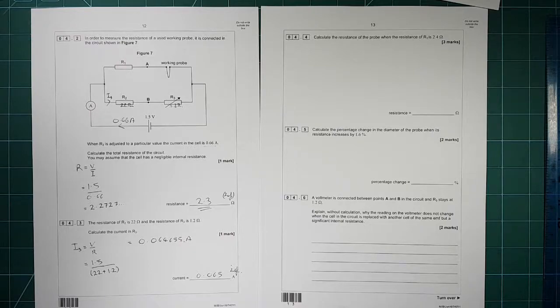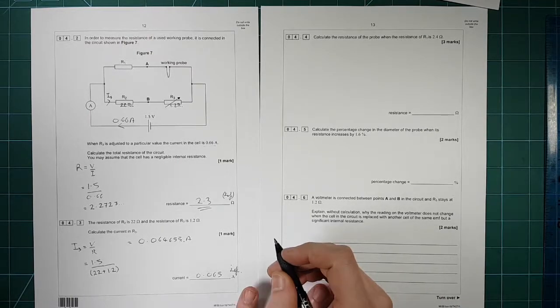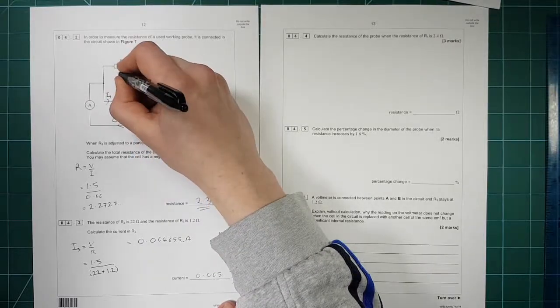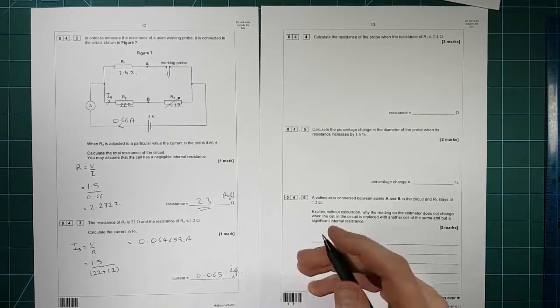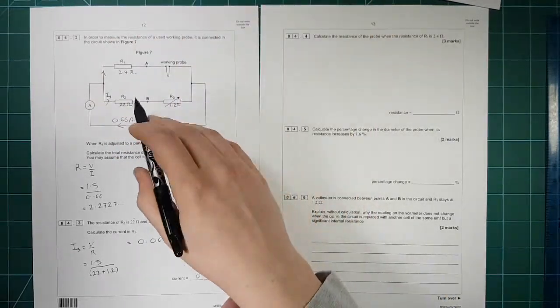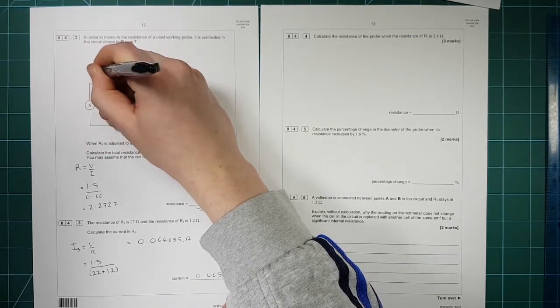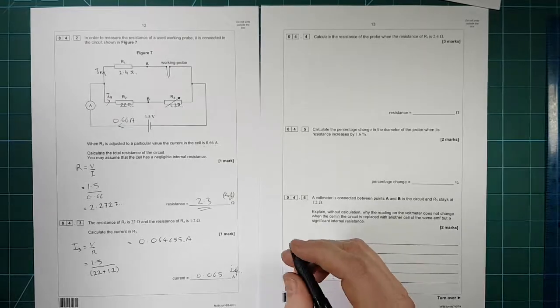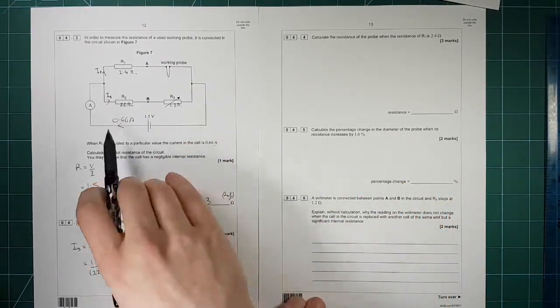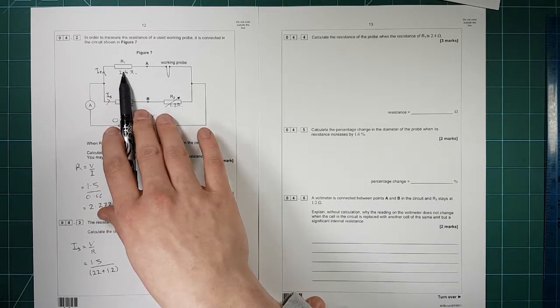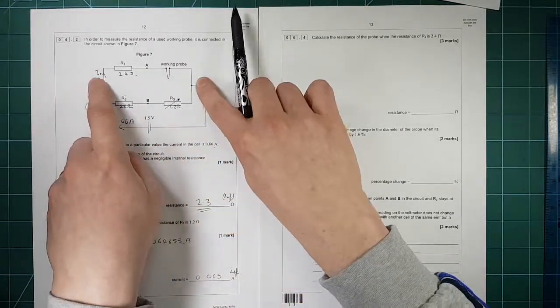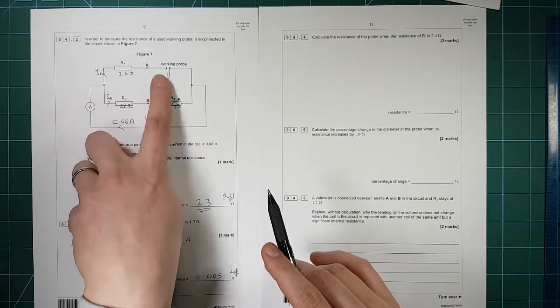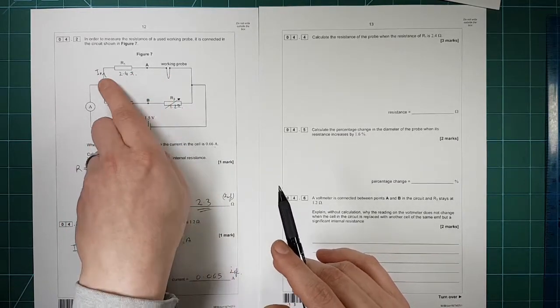We need to calculate the resistance of the probe when the resistance of R1 is 2.4 ohms. So let's write that on the diagram as well. I'm going to call this one IP for the current that goes through the probe. We know the resistance of that. We don't know the resistance of that. We know the current that's going through that and we know the potential across that whole section there. So we can work out the total resistance of that section there. But first of all, we need to work out this current.